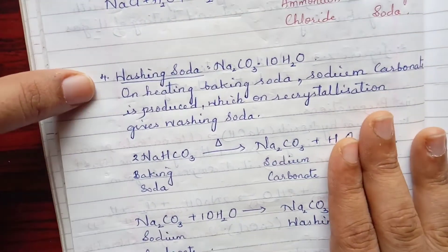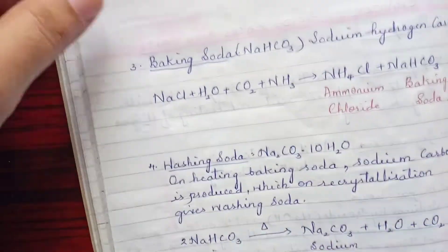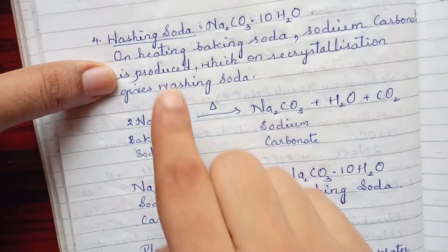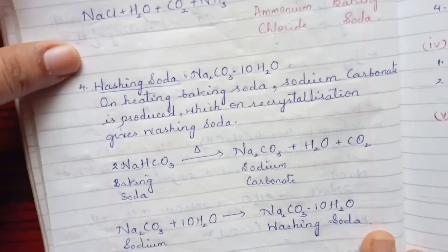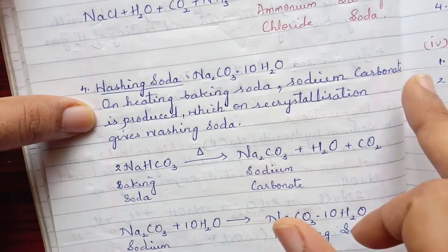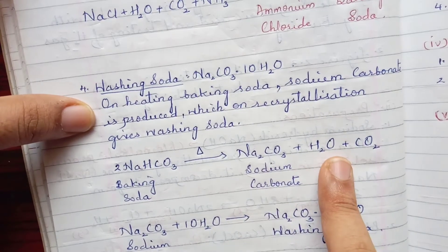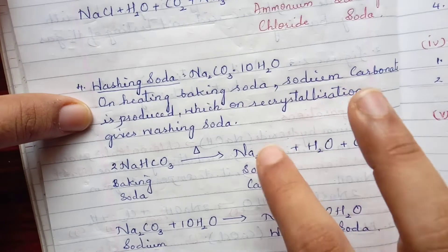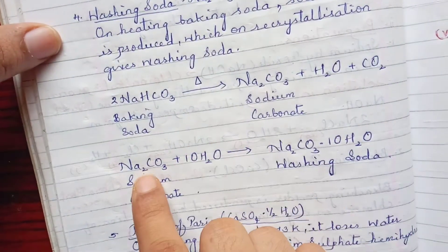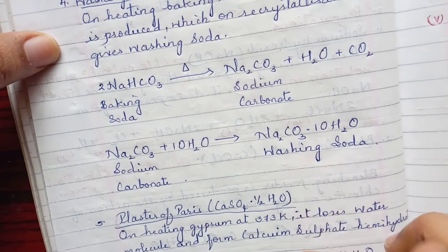Next is washing soda. Questions may ask how to produce washing soda using baking soda, or simply ask for the preparation of washing soda — both require the same answer. You have two reactions to write. First, heat baking soda; it gives sodium carbonate along with water and carbon dioxide. Then, recrystallize by combining that sodium carbonate with a certain number of water molecules to form crystals of sodium carbonate, which is washing soda.